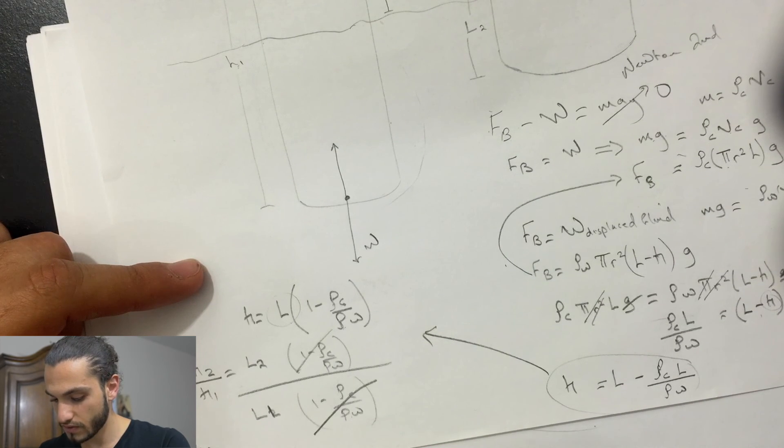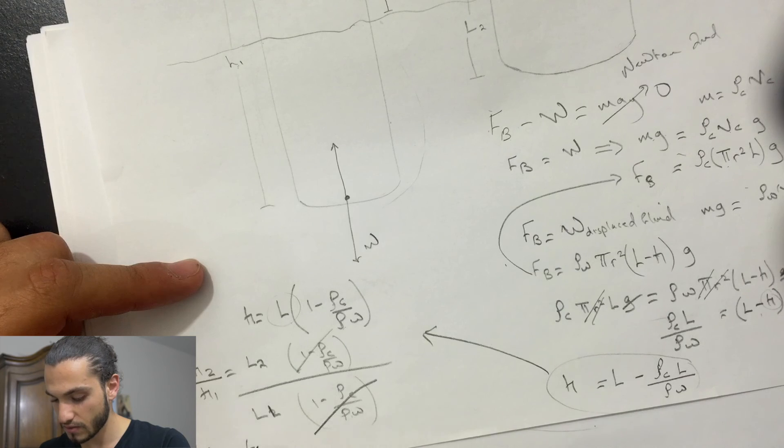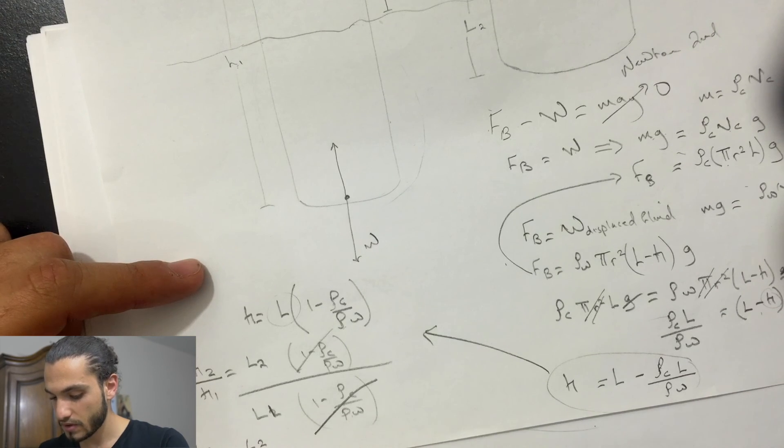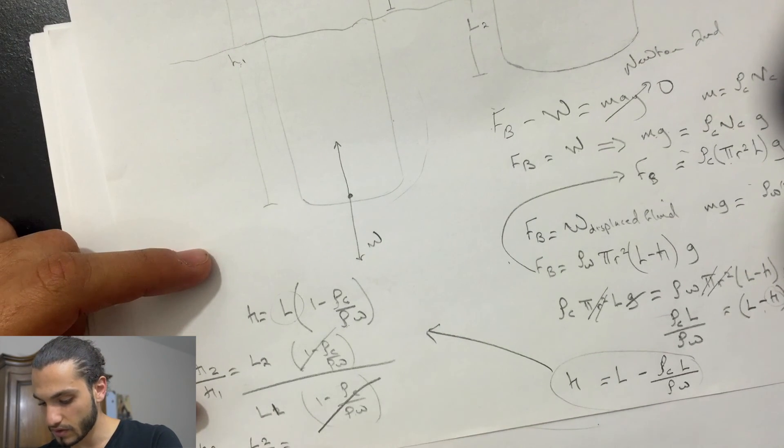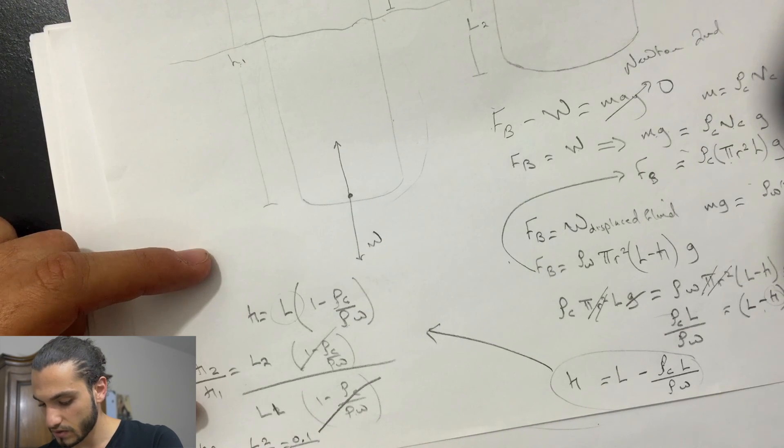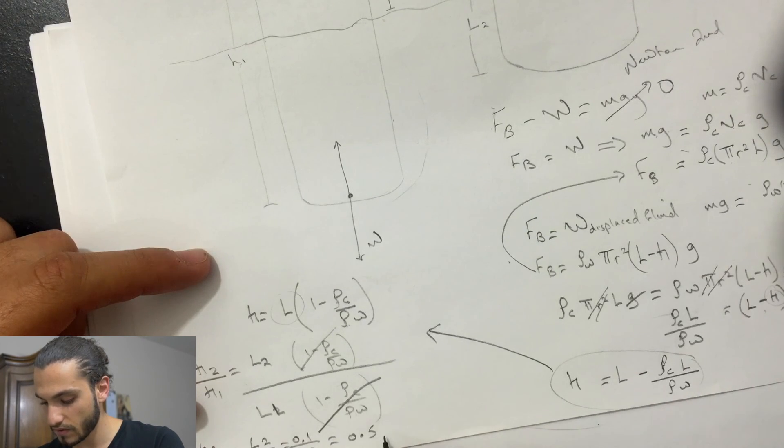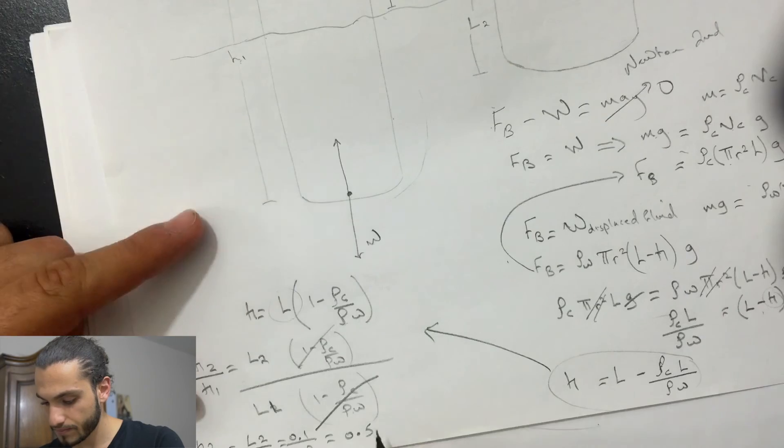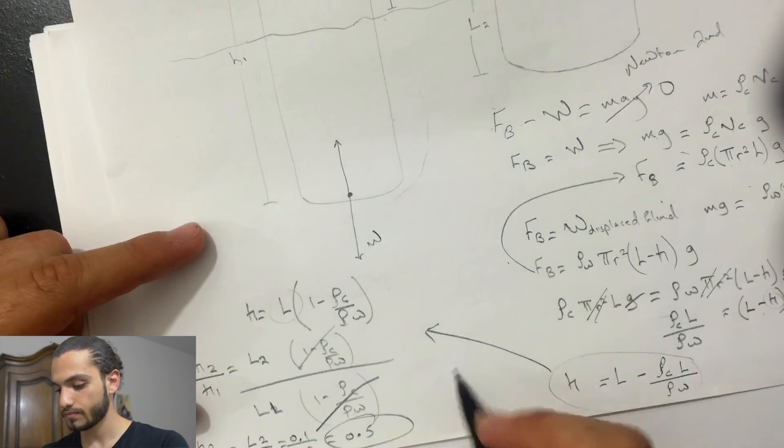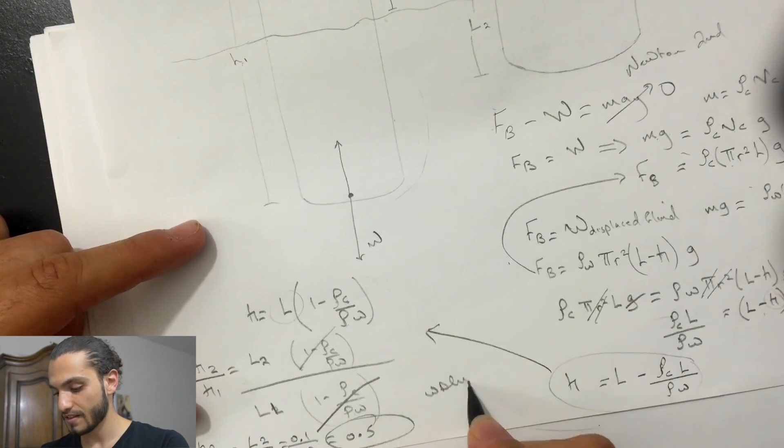So H2 divided by H1, that's gonna just go to L2 over L1. So my values for these were this one is 0.1, this one is 0.2, so this is just equal to 0.5. So this is the answer, hope this helps.